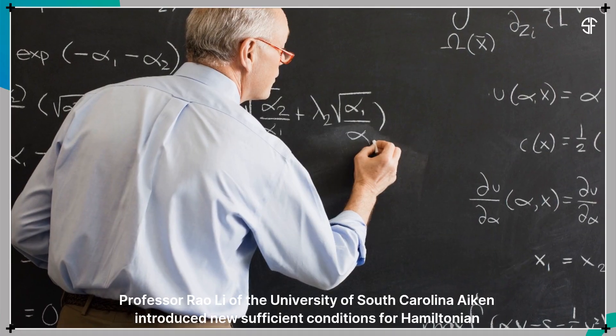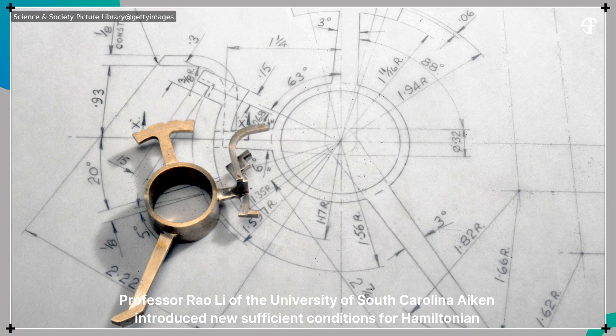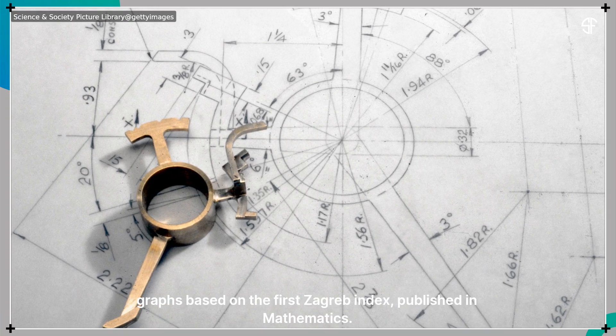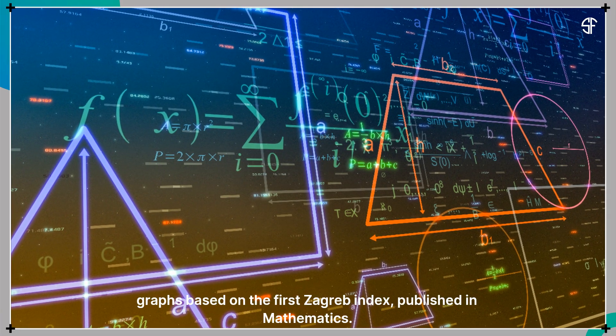Professor Rao Lee of the University of South Carolina Aiken introduced new sufficient conditions for Hamiltonian graphs based on the first Zagreb Index, published in mathematics.